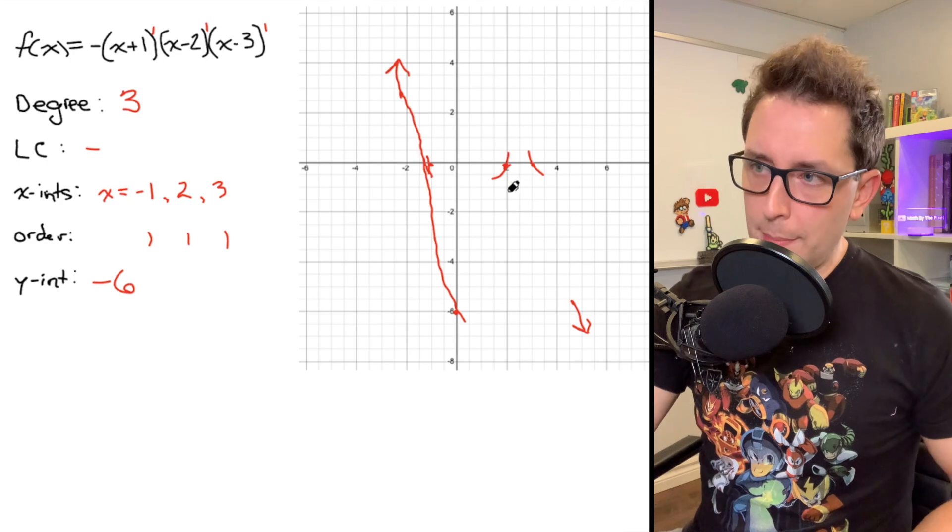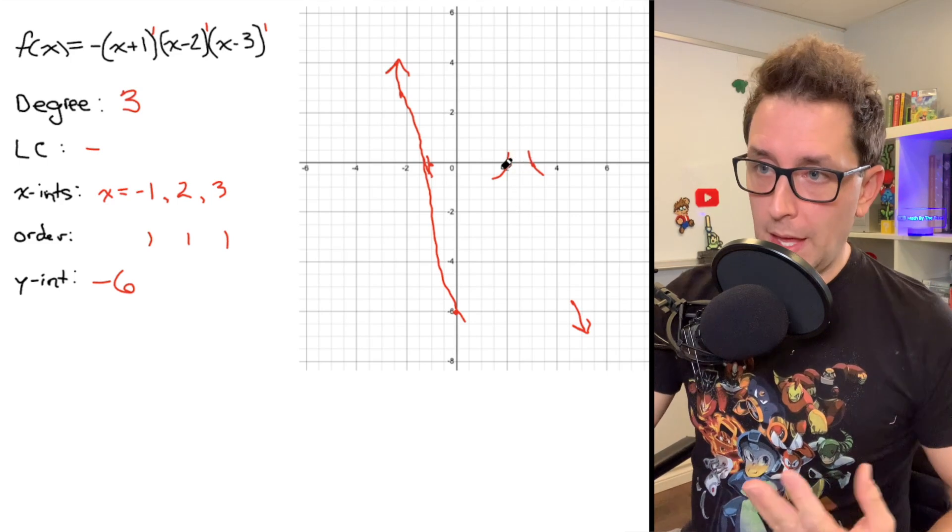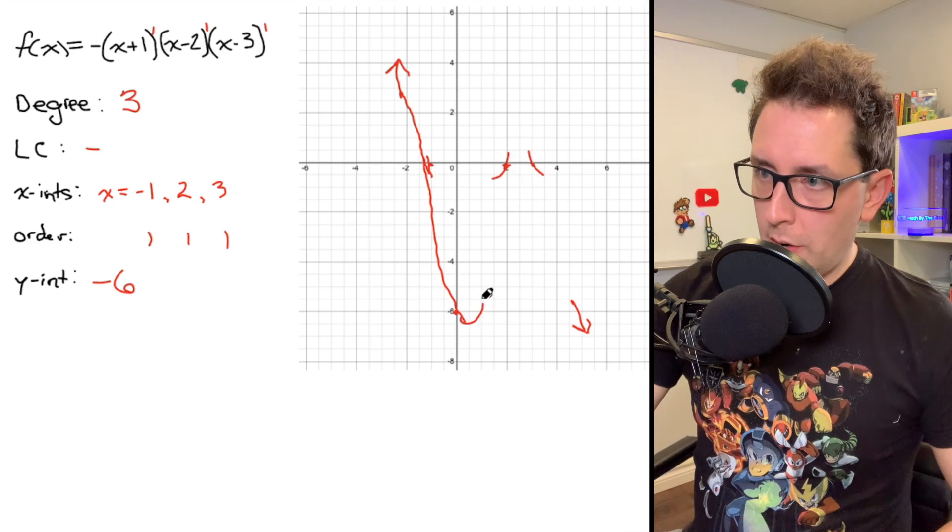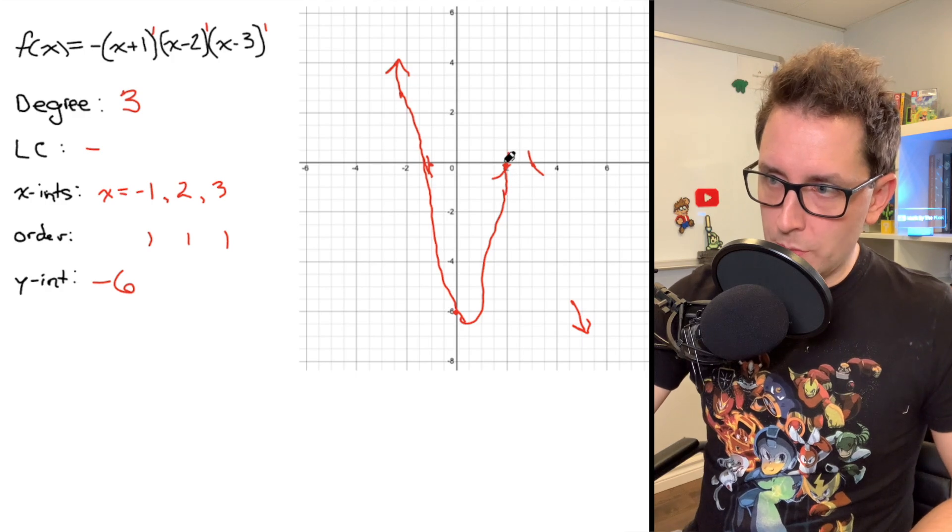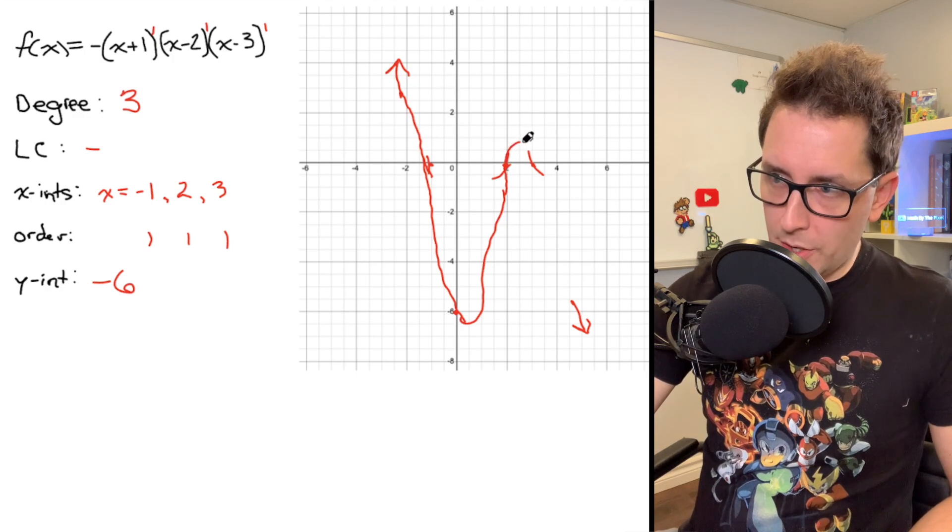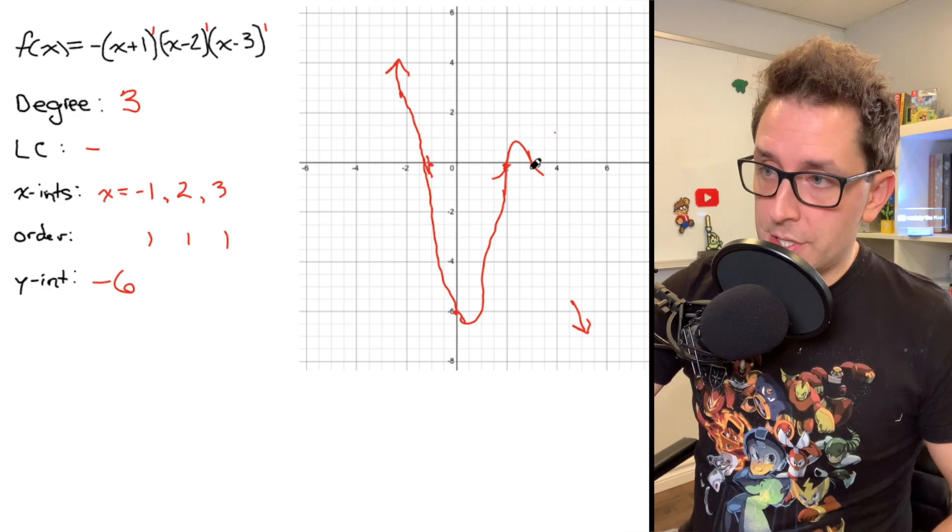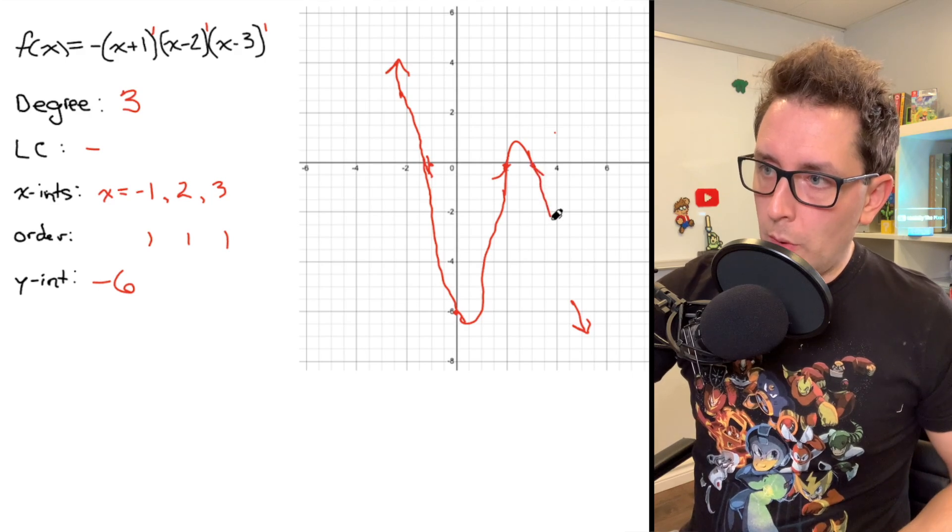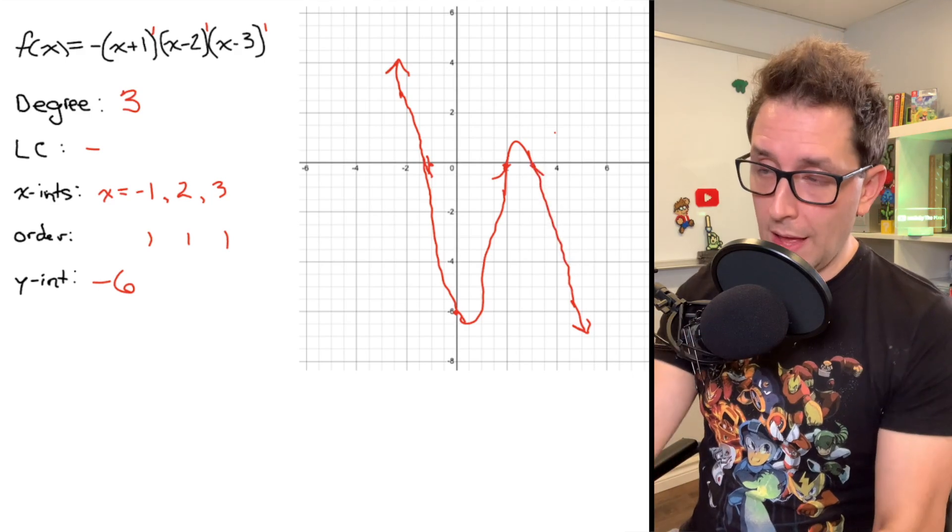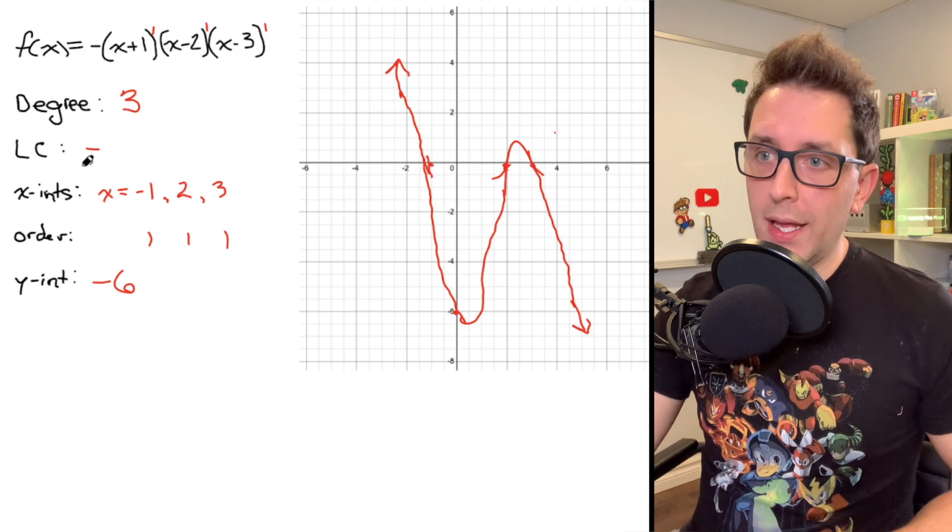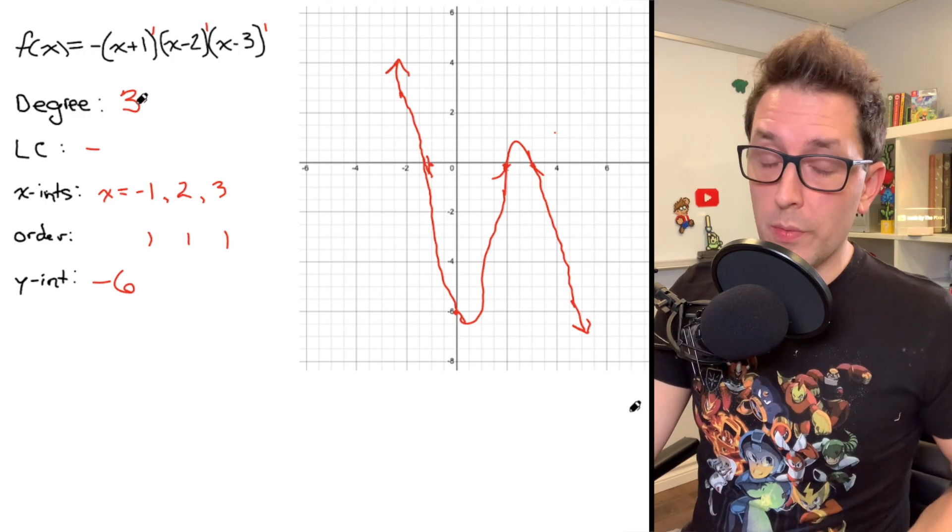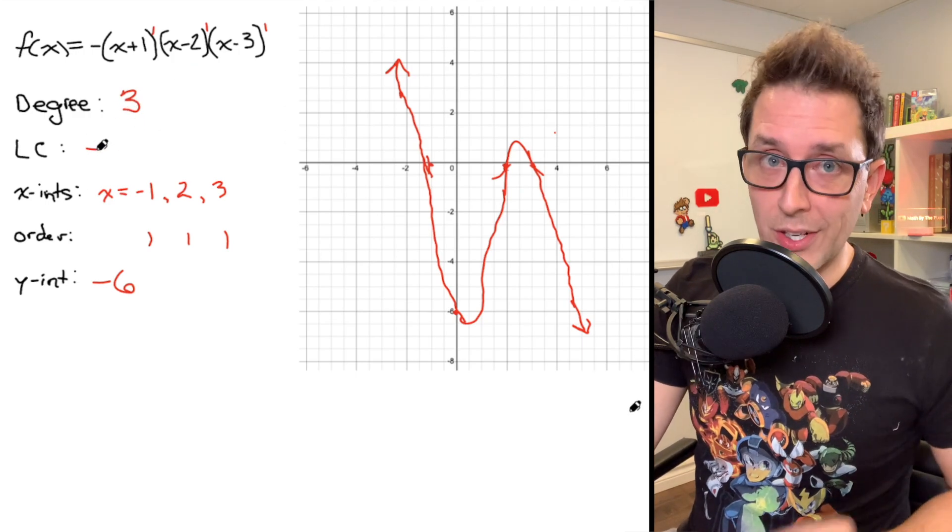So I'm going to start up in quadrant 2, and I'm going to slowly work my way down to that first x-intercept. I'm going to pass through it, and I'm going to keep on going down to my y-intercept. Now I'm at that y-intercept. I have to somehow get back up to that x-intercept at 2. So I'm going to spin around and come right back up, and I'm going to pass through that x-intercept. I'm going to bounce back around again, pass through the next x-intercept at 3. And I'm going to come all the way back down to join my function in that quadrant 4, where I know I'm heading based on the fact that I'm working with a degree 3 polynomial with a negative leading coefficient.